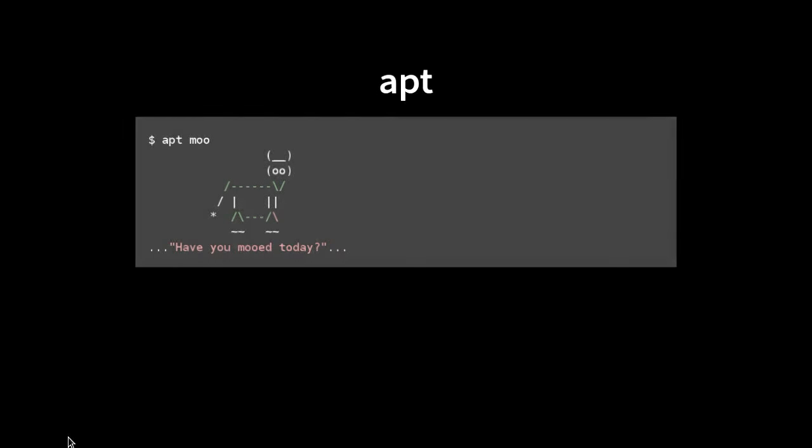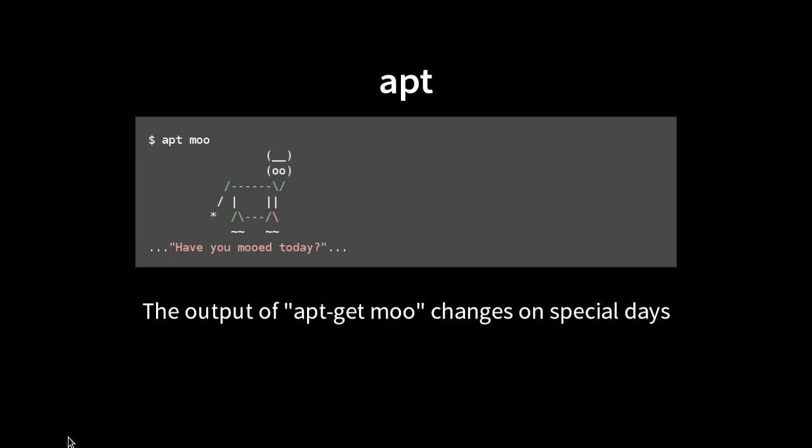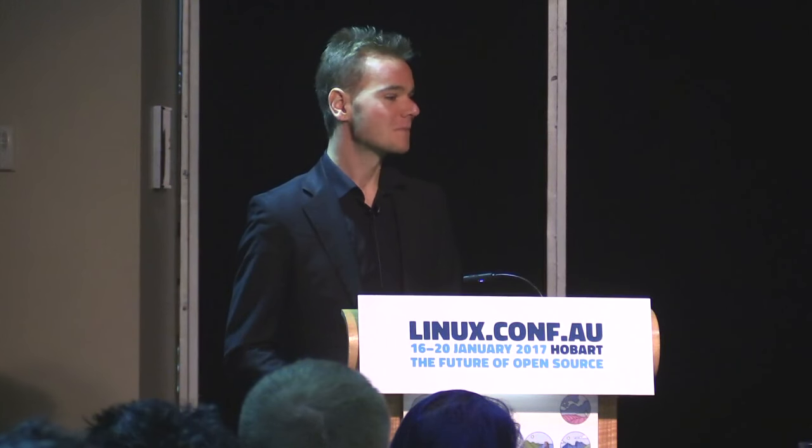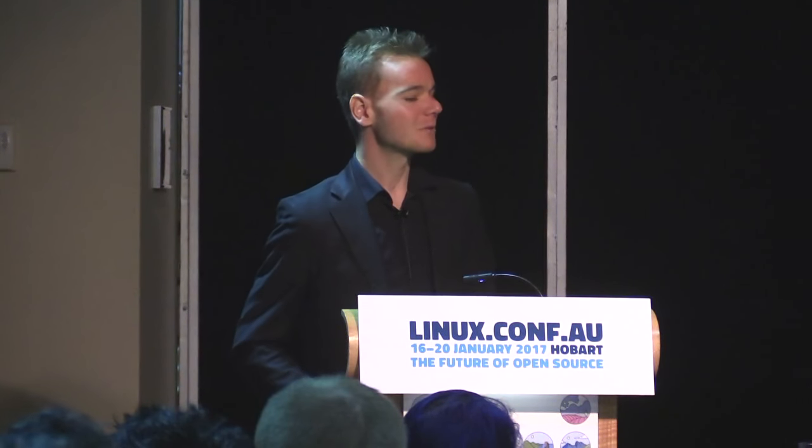apt itself has non-reproducible output. Has everyone seen 'apt moo'? It's a bit of an Easter egg. Unfortunately, on certain special days — I won't give away which days — you get different cows in the output. As of today, that's been fixed and is in the apt repository, so apt is now fully reproducible, ready for the next release.